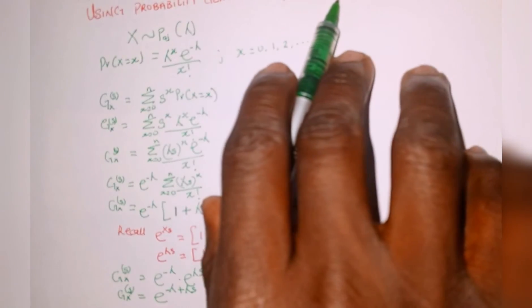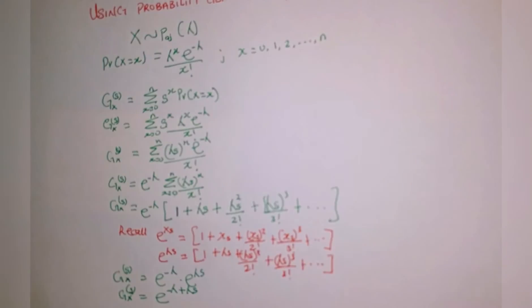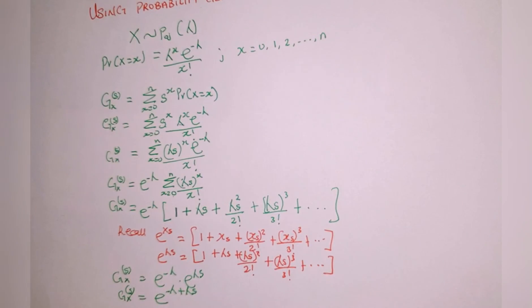So the variance of X equals lambda, and the mean is also lambda. This is how to use the probability generating function to find the mean and the variance of a Poisson distribution. Thank you for watching, and please follow and subscribe to our channel for more content like this. Thanks.